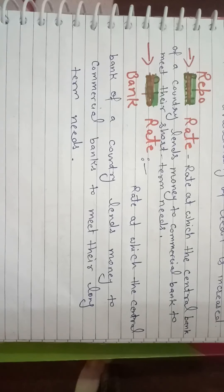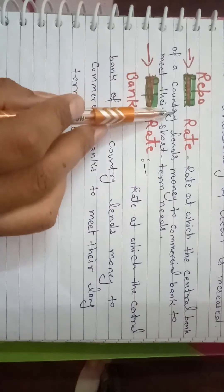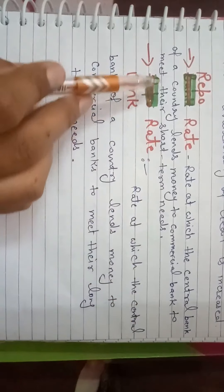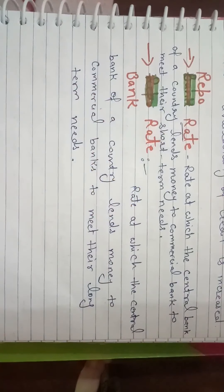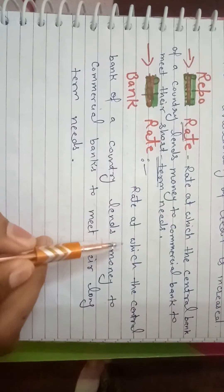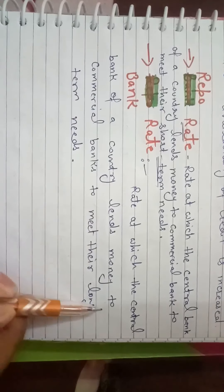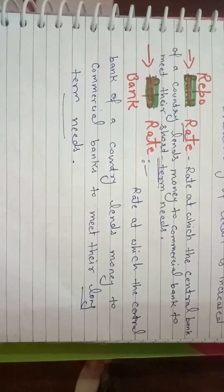First, repo rate and bank rate. Repo rate is the rate at which the central bank lends money to commercial banks to meet their short-term needs. Bank rate is the rate at which the central bank lends money to commercial banks to meet their long-term needs. Both are interest rates at which commercial banks get loans from the central bank.